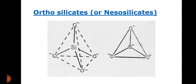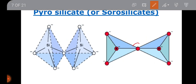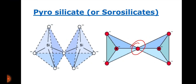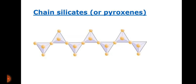Orthosilicate or neosilicate is generally composed of only one silica tetrahedron. The next category is sorosilicate, in which two or more tetrahedra are joined by sharing apical oxygen. Third is cyclic silicate or ring silicate — they are closed rings of tetrahedra, not chain silicates.